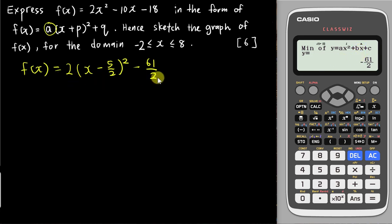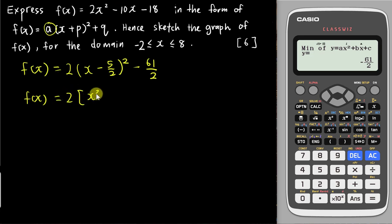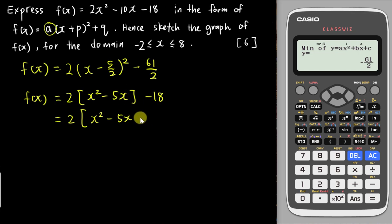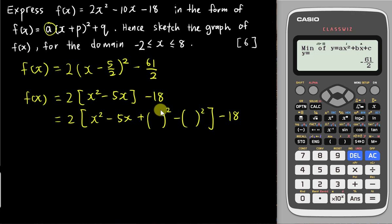Now I'll also teach you how to get this equation manually by completing the square. The first step is to factorize out the coefficient of x², which is 2, giving: 2(x² - 5x) - 18. Then copy the first term, copy the second term, add (something)² and subtract (something)² — where 'something' is b/2. Since b is negative 5, that's negative 5/2.